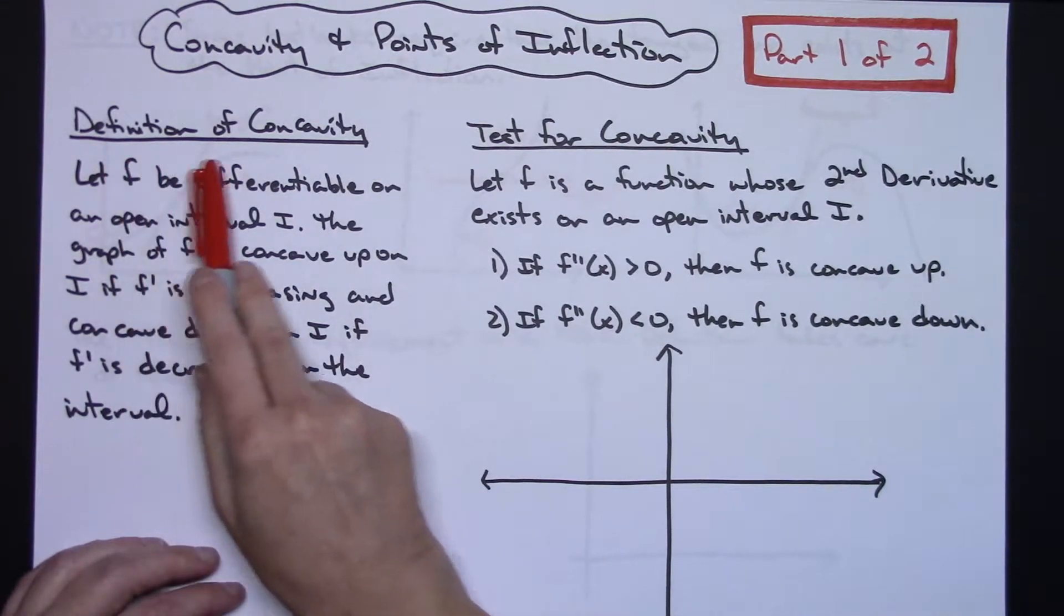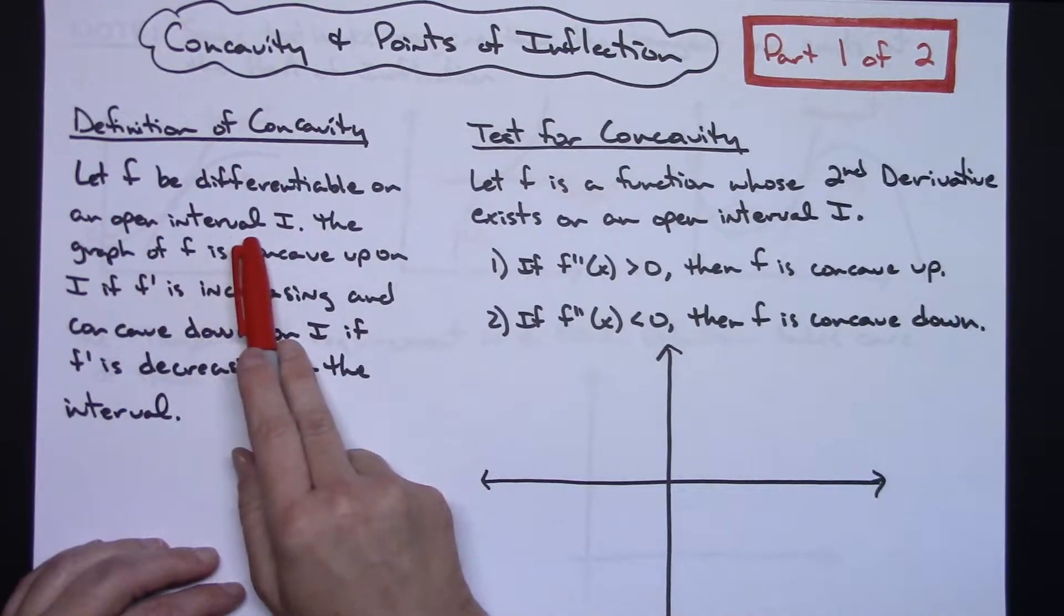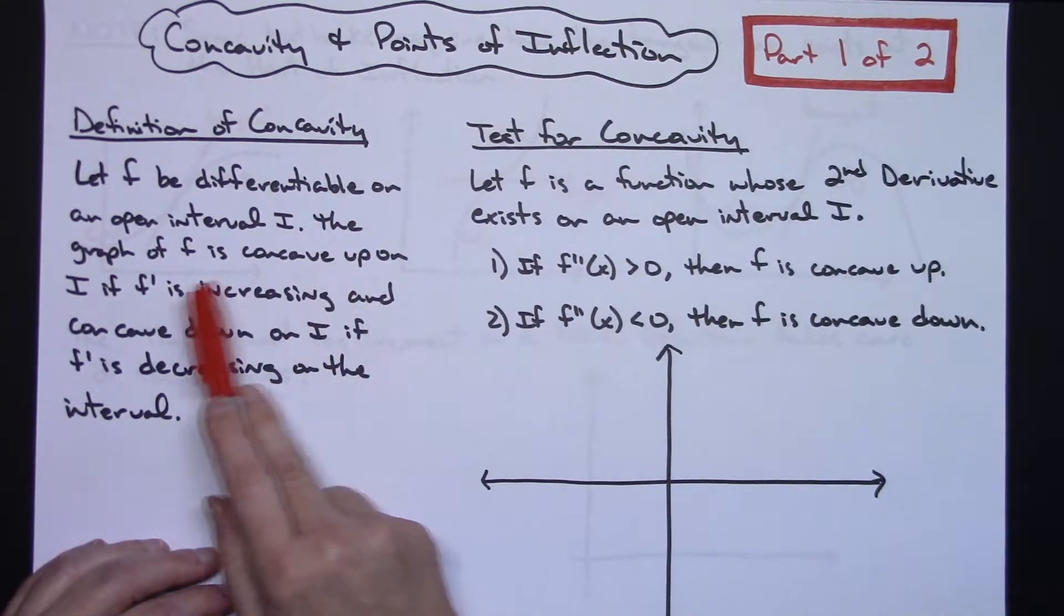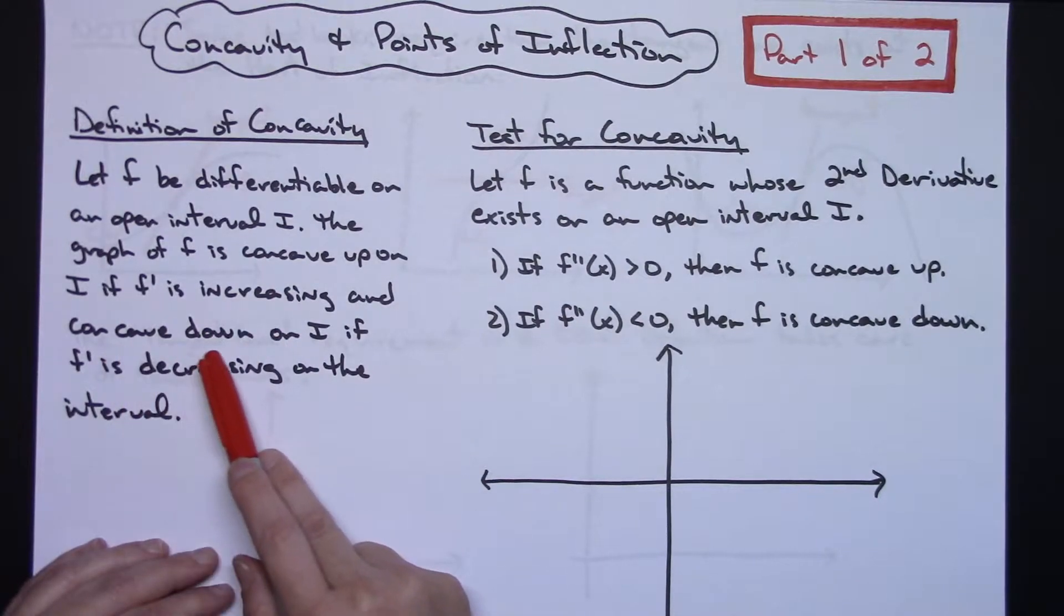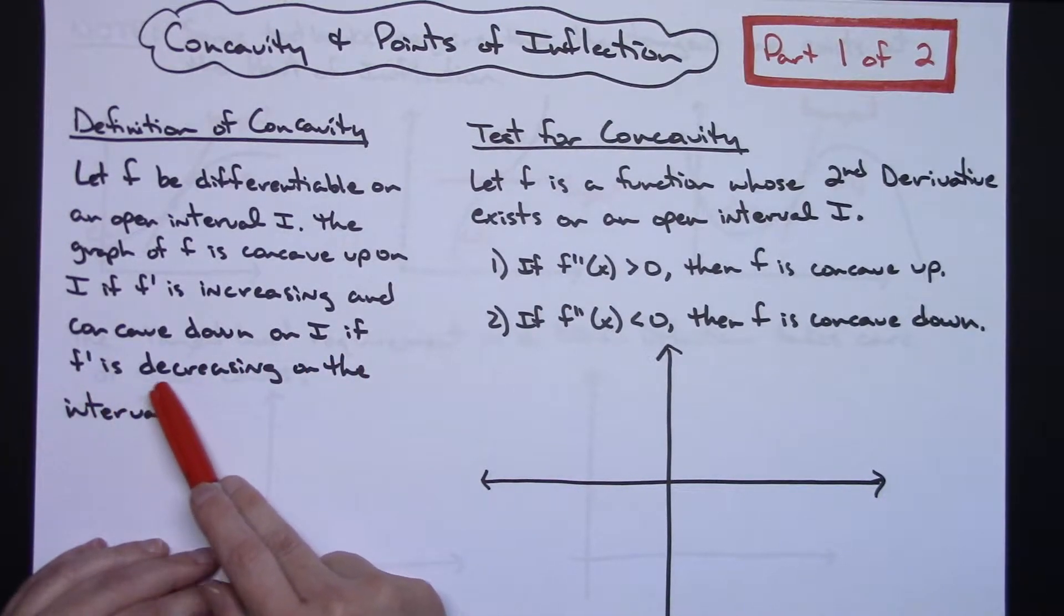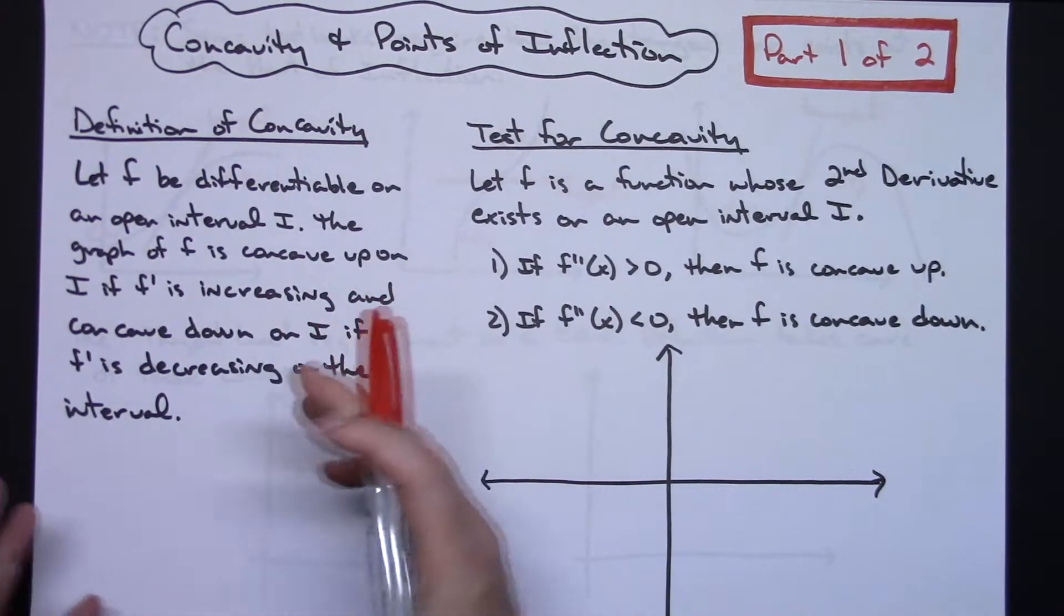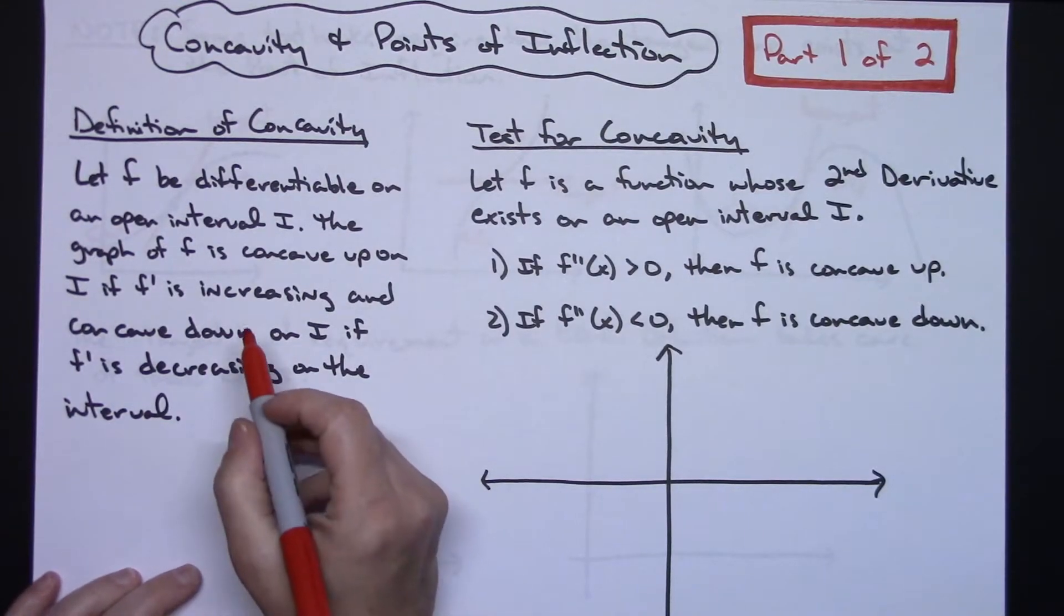We're going to start here with the definition of concavity. We're going to let F be differentiable on an open interval. The graph of F is concave up on the interval if F prime is increasing and concave down on the interval if F prime is decreasing on the interval. So wordy definition, all written out in words, but there is something definitely to memorize out of this.